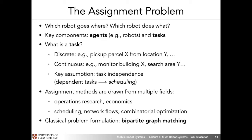Assignment methods are drawn from multiple fields, with lots of active ongoing research. The most prominent field is operations research, closely related to economics. Within industrial manufacturing, there's scheduling, network flows, and combinatorial optimization areas more closely related to core mathematics. One of the most classical ways of representing the assignment problem is bipartite graph matching, which we can use for simpler systems that don't necessarily include task dependencies — and we'll be working with this representation quite a bit in this lecture.